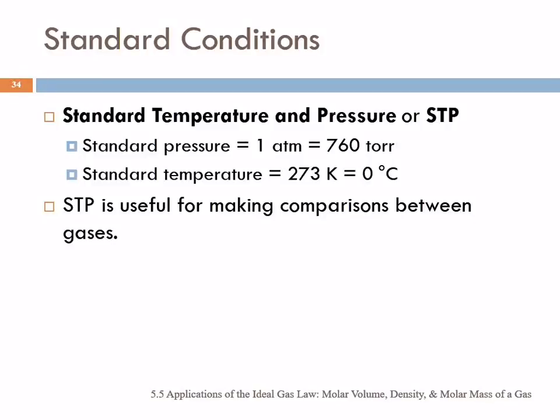Standard conditions. As a convenience, we refer to a pressure of one atmosphere, which is the same as 760 torr or 760 millimeters of mercury, as standard pressure. That is a very normal pressure, average atmospheric pressure at sea level. Standard temperature is 273 Kelvin or 0 degrees Celsius.